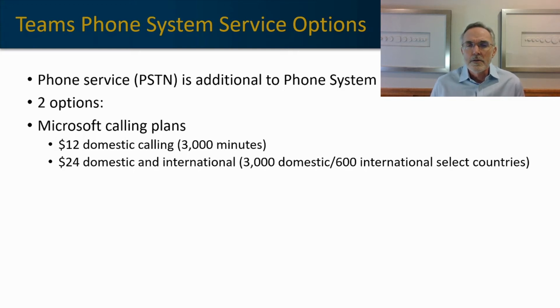The $24 domestic and international plan in the United States offers those 3,000 minutes for domestic calling and another 600 minutes for international calling. Now these minutes are pooled within the users of a given country. So if you had 50 users in the United States on a domestic plan, they would have collectively about 150,000 minutes to use during the course of any given month. If they ran over those minutes, then they would be billed per minute for any additional usage.